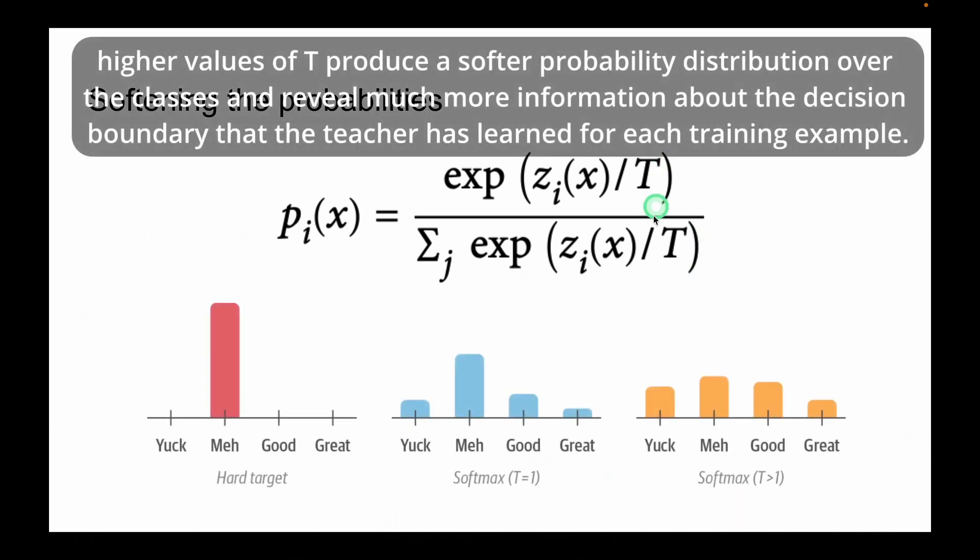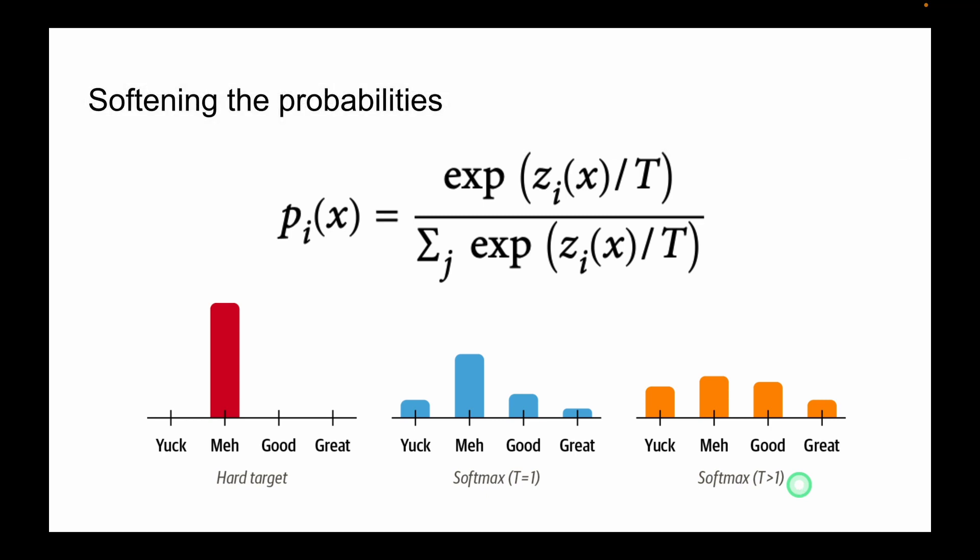Higher values of T produce a softer probability distribution, like in this figure, over the classes and reveal much more information about the decision boundary that the teacher model has learned. For training example, when T equals 1, we recover the original softmax distribution.